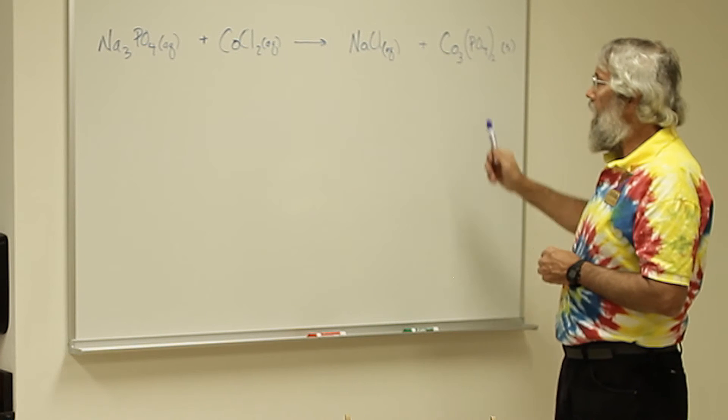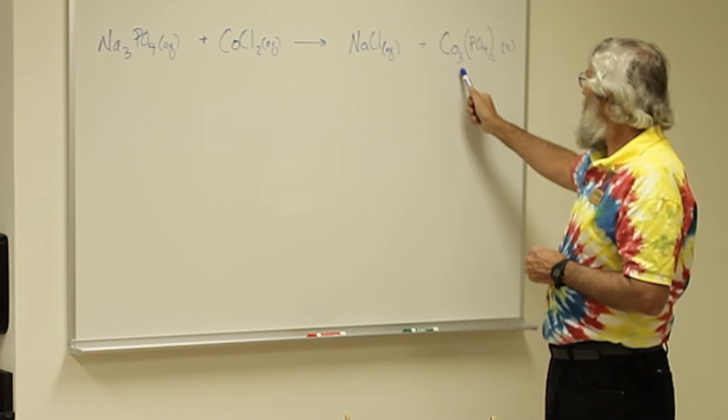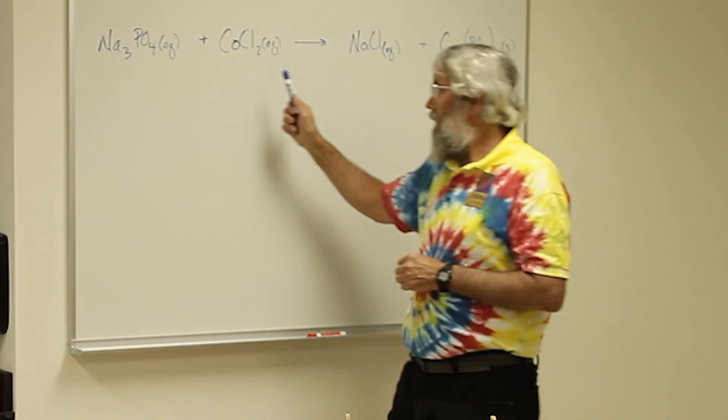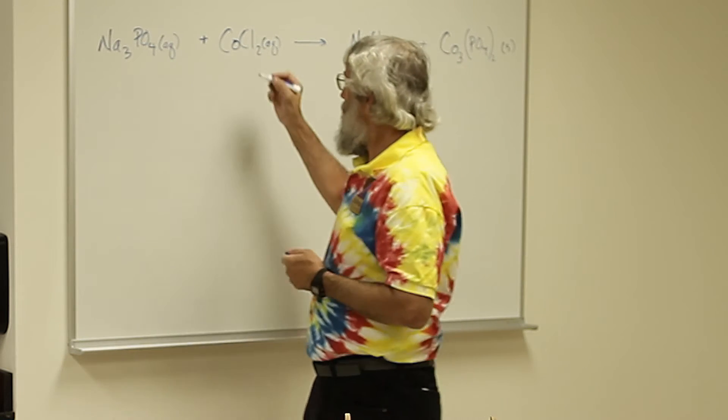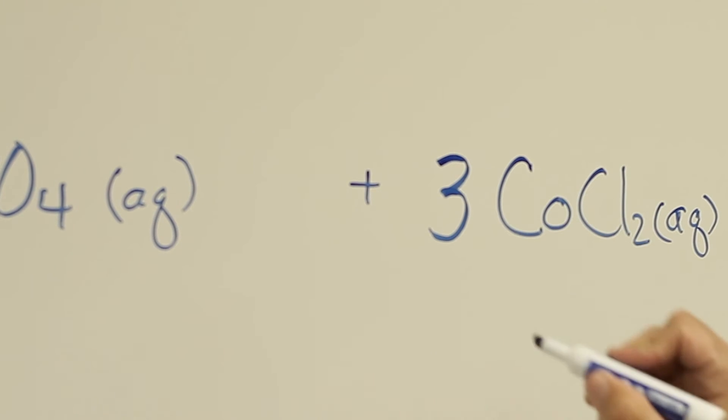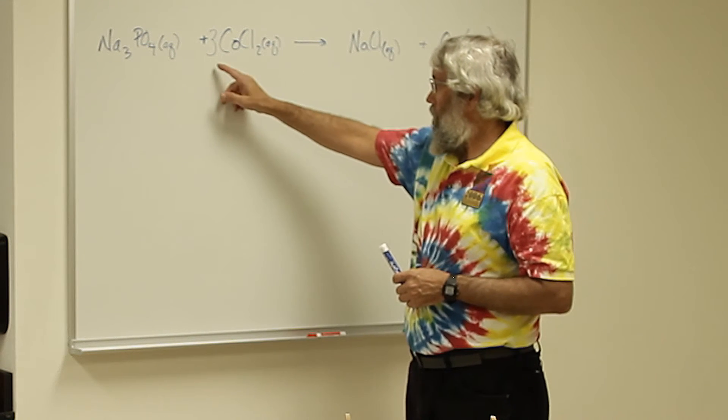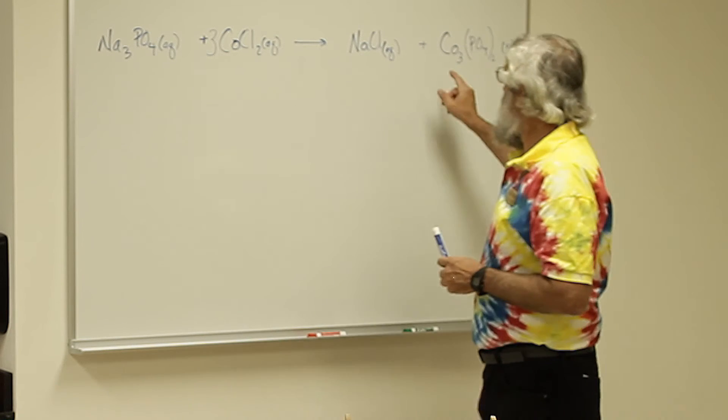Let's start by looking at the element cobalt. There are three cobalts on this side. The way to make this become three is to use a three in front of this. Now this says we have three cobalts and three cobalts.